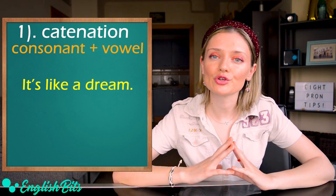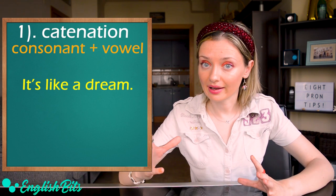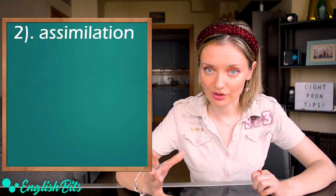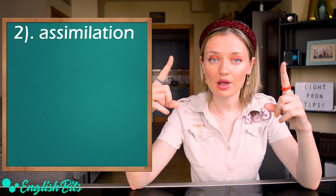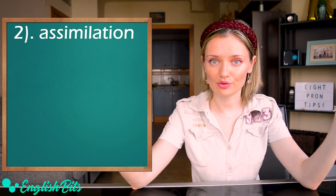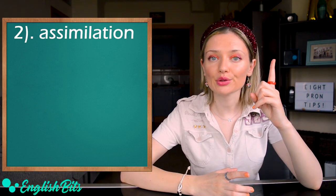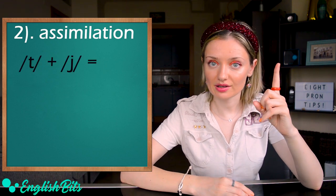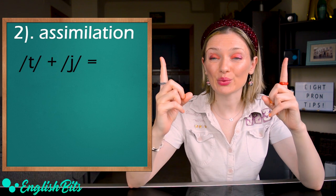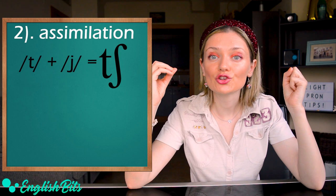And now let's move on to the second type of connected speech and linking, which is assimilation. It happens when two sounds blend together, forming a new sound. So when the last sound of the first word is T and the first sound of the next word is Y, the new sound is T.